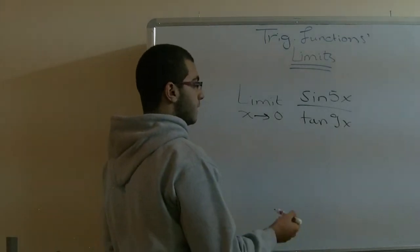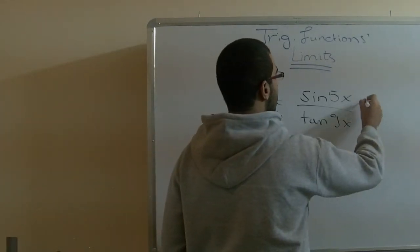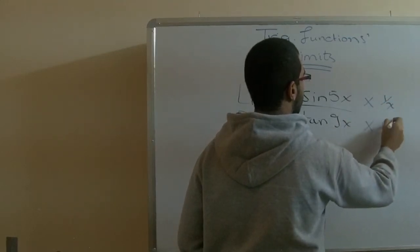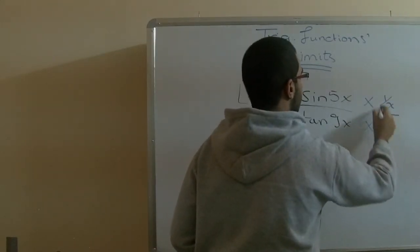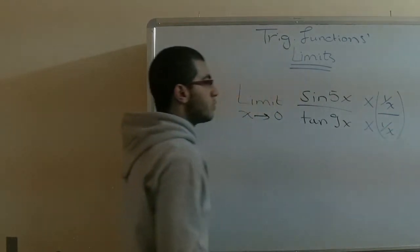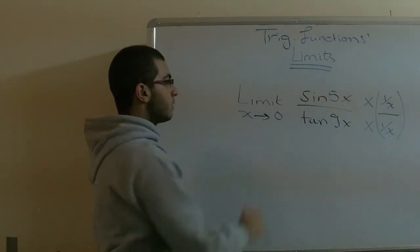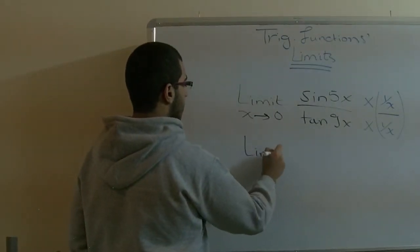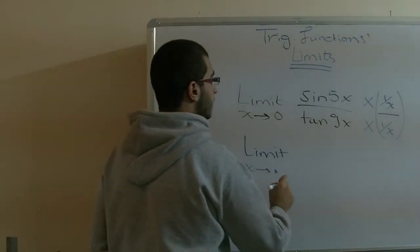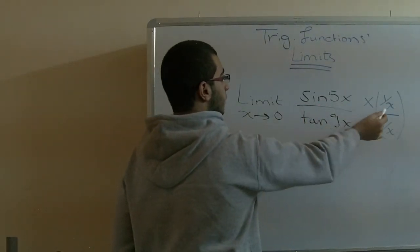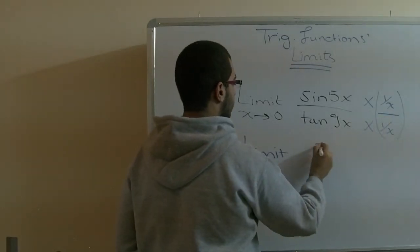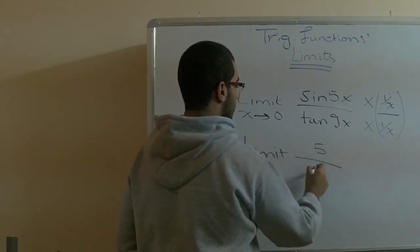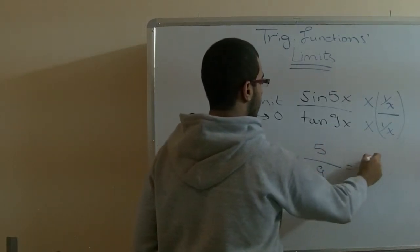We can multiply the numerator and denominator by 1 over x, which equals 1, so it doesn't affect our expression. The limit of x approaching zero will be sine 5x over x, which gives us 5, and tan 9x over x gives us 9, so it will equal 5 over 9.